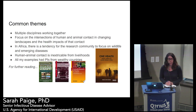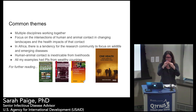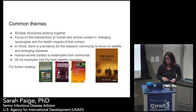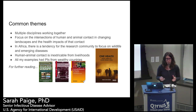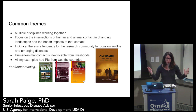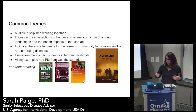Some common themes of One Health research in Africa: it's epitomized by multiple disciplines working together — human health, animal health, and environmental components like a tripod supporting a platform of research. The focus is on intersections of human-animal contact, changing landscapes, and the health effects of those interactions. In Africa the tendency is to focus on wildlife and emerging diseases because that's where funding flows. Human-animal contact is inextricable from livelihood elements, so we need to understand structural and political-economic drivers of contact. All my examples have PIs from wealthy countries — going forward I want to find research projects led by PIs from the countries being studied.